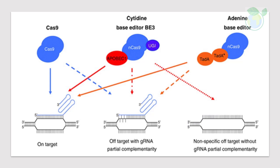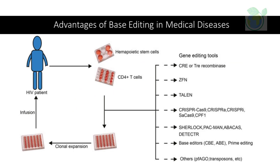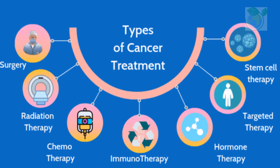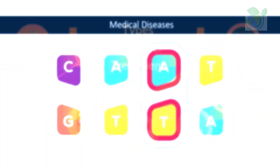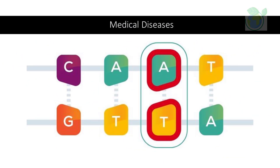One of the advantages of base editing is that it can be performed in hematopoietic cells, which are the cells that give rise to all the different blood cells in our body. This is important because many blood disorders are caused by genetic mutations in hematopoietic cells. Additionally, base editing can also be used to target disease-causing genes or genetic regulatory regions, allowing scientists to inactivate them. This can be a powerful way to treat blood disorders such as cancer that are caused by the overactivity of specific genes. By using base editors to correct these mutations, scientists hope to provide a cure for many blood diseases, such as sickle cell anemia, beta-thalassemia, and others.